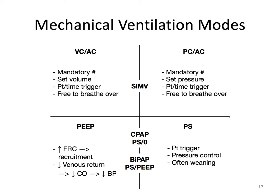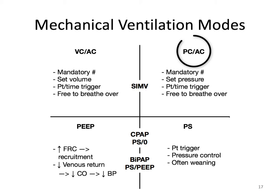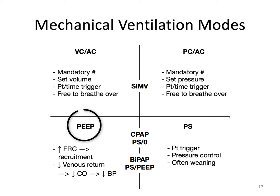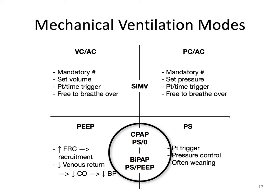The most common modes of ventilation: Volume Control Assist Control (VC-AC) involves a set mandatory respiratory rate with a set volume that is patient or time triggered, and the patient is free to breathe over the settings. Pressure Control Assist Control (PC-AC) is very similar to VC-AC but controls for pressure instead of volume. Synchronized Intermittent Mandatory Ventilation, or SIMV, has the same features of VC-AC and PC-AC but can control for either pressure or volume. PEEP is as described, pressure support is patient triggered and is a common weaning method, and CPAP and BiPAP integrate both features of PEEP and pressure support.